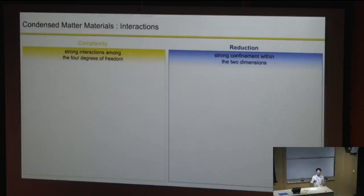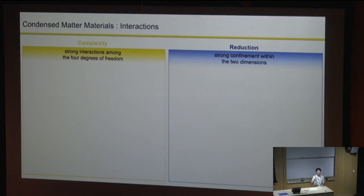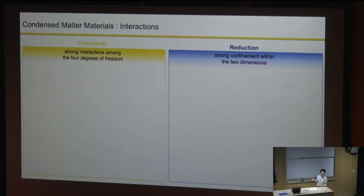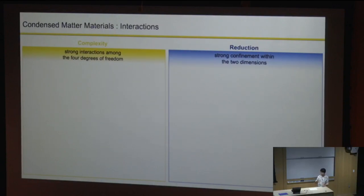If you allow me to coarsely divide interactions into two big families: one is that people want to leverage the complexity of interactions, meaning strong interactions of multiple degrees of freedom of millions and billions of particles inside solid materials. Another category is people try to reduce the interaction to within the two-dimensional limit and reduce the third dimension of the macroscopic material.